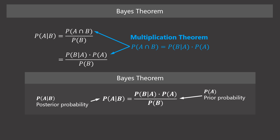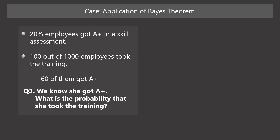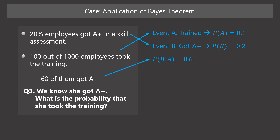A's probability is the prior probability, and the conditional probability of A given B is the posterior probability. Let's apply Bayes' theorem to the previous case. Whether an employee took the training or not is represented as event A, so A's probability is 0.1. Getting A+ in the skill assessment is represented as event B, so B's probability is 0.2. Among the employees who took the training, 60% got A+, so the conditional probability of B given A is 0.6.